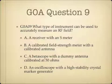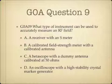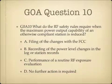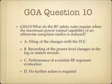Question 9. What type of instrument can be used to accurately measure an RF field? A, a receiver with an S meter; B, a calibrated field strength meter with a calibrated antenna; C, a beta scope with a dummy antenna calibrated at 50 ohms; or D, an oscilloscope with a high-stability crystal marker generator? Question 10. What do the RF safety rules require when the maximum power output capability of an otherwise compliant station is reduced? A, filing of the changes with the FCC; B, recording the power level changes in the log or station records; C, performance of a routine RF exposure evaluation; or D, no further action is required?